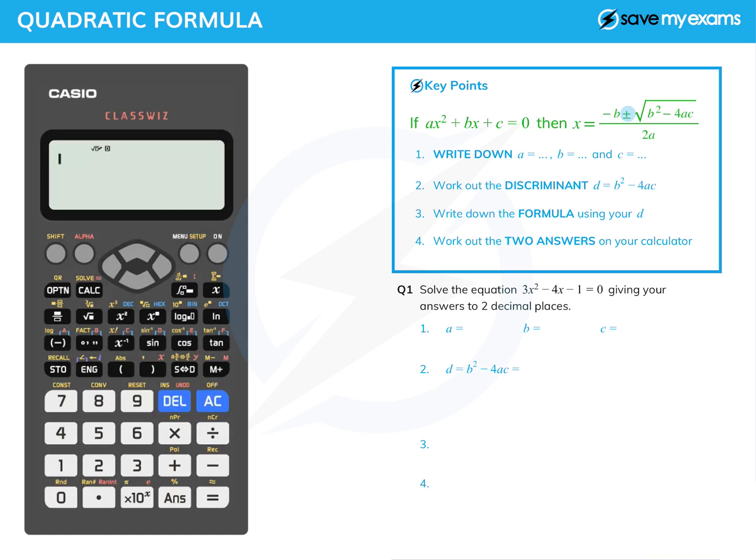Don't forget the plus or minus, that's very important because it gives us two answers as we would expect from a quadratic. And this thing underneath the square root, which is called the discriminant, b squared minus 4ac, is very important here and in other contexts, so be aware of that.